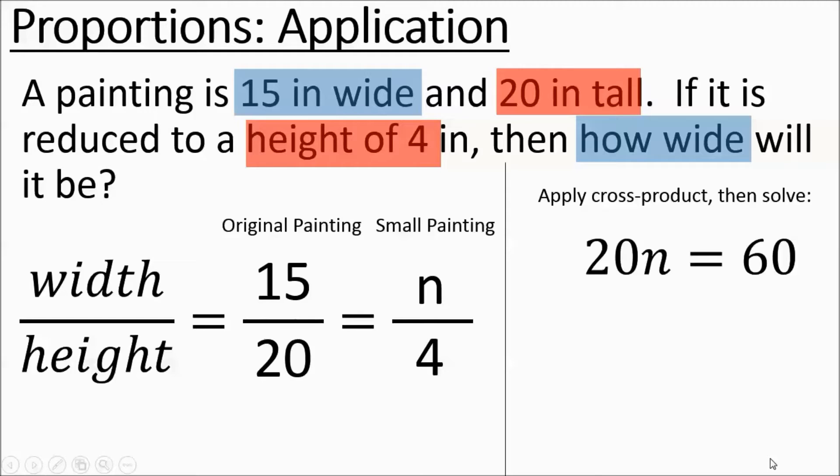So then from there you divide out the 20 you end up getting n equals 3. So the small painting's width will be 3 inches. Let's move on to another one.